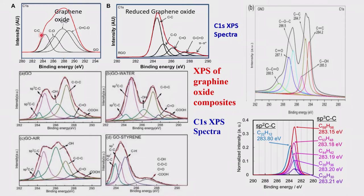So you get: carbon-carbon bond around 284 eV, carbon with one oxygen around 286 eV, carbon with double-bond oxygen around 287 eV, and carbon with two oxygens around 289–290 eV. You can see C–C, C–O, C=O, and CO₂-type species — the latter referring to carboxylate and carboxylic esters, not carbon dioxide. This is graphene oxide in general. When reduced, some level of oxidation is reduced — that is reduced graphene oxide (rGO).